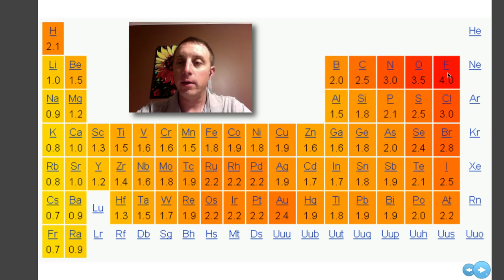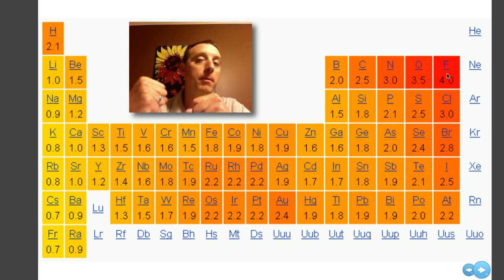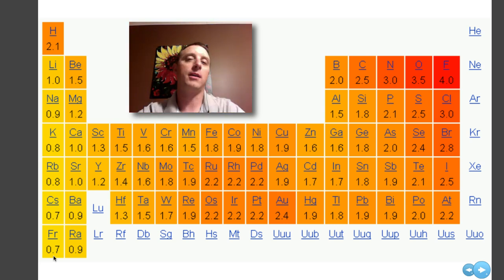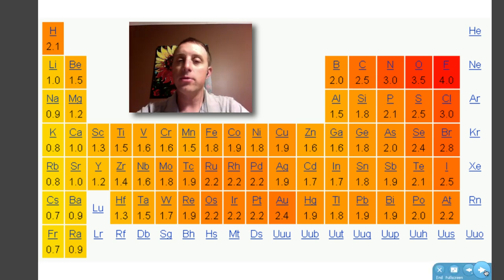Fluorine here, with an electronegativity of 4.0, holds on to its electrons very tightly. It does not want to give them up. Whereas down here, something like francium has a very low electronegativity. Its electrons are ready to fly off. It will give off its electrons very easily. So this number has a very large effect on the type of chemical bond that the element will enter into.